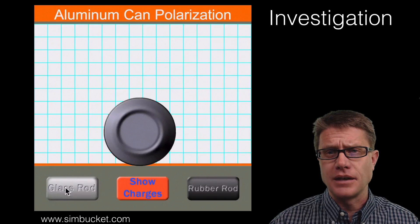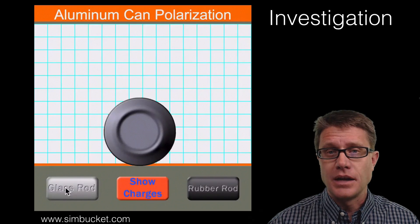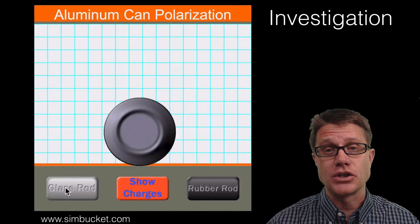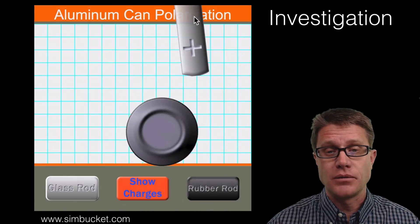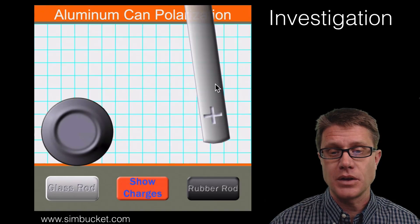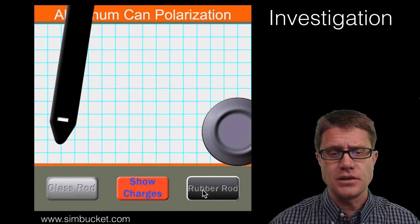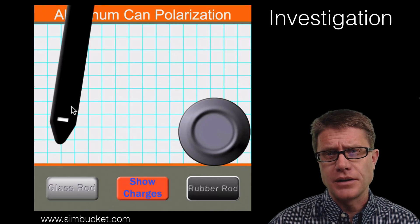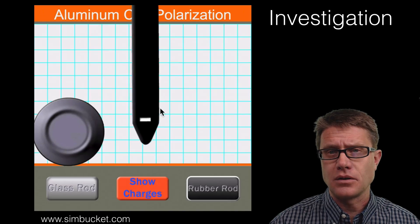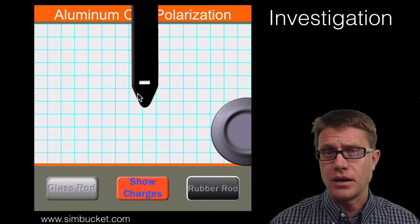Now let's apply that using another simulation. What we have here is an aluminum can. I can charge up a glass rod, which has a positive charge, or a rubber rod, which is going to have a negative charge. If you have the glass rod with a positive charge, note that wherever I move it, that aluminum can is drawn towards it. Now let's add a rubber rod that has a negative charge — wherever it is, the aluminum can is going to be drawn towards it.